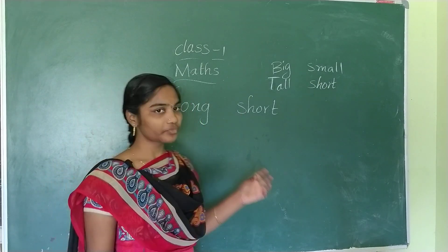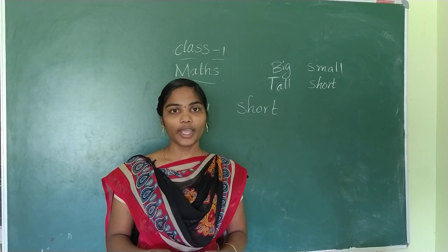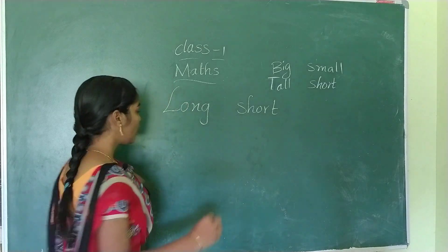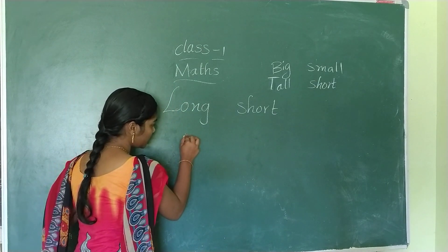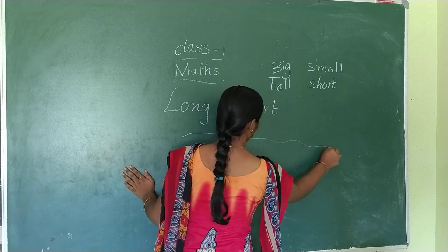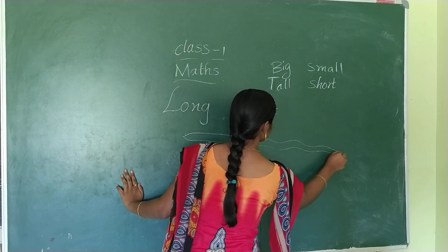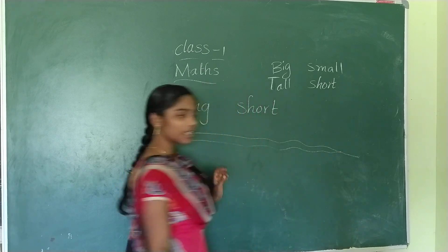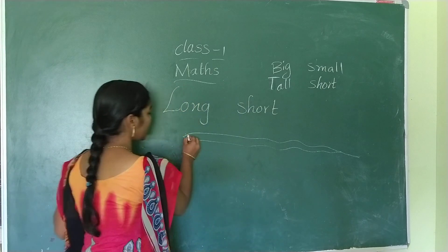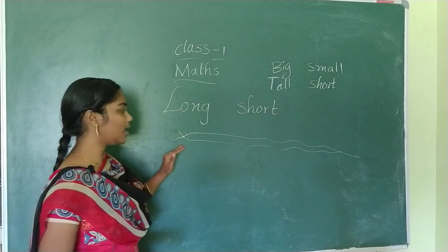Long means something that is lengthy. For example, look at the snake. One of the snakes shown is long. Can you see? Long snake — that one is long.